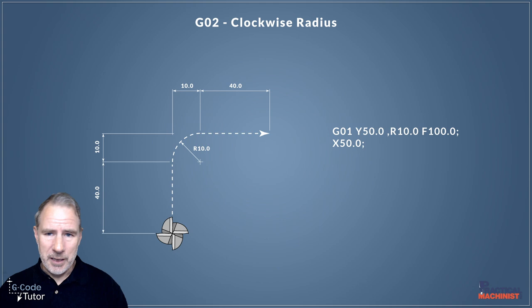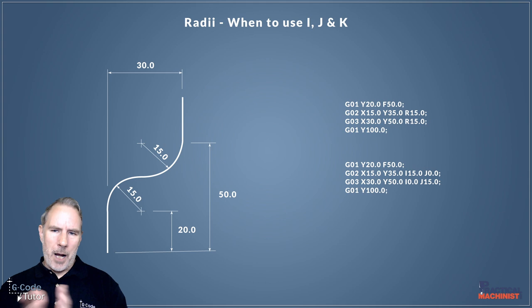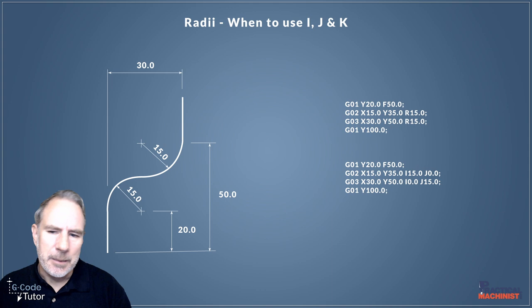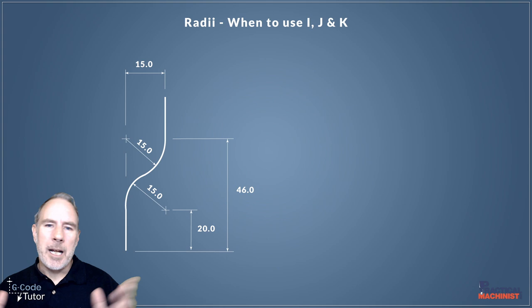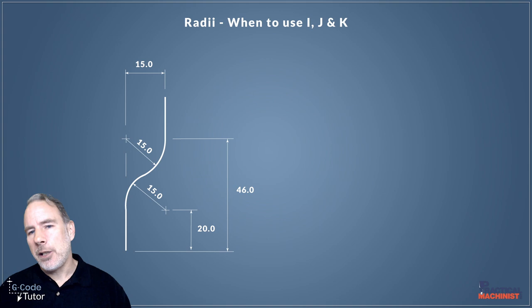Why do we need to use I, J, and K when we can just use an R value? Well, when we're programming a part like this, we could use R values for sure, but using I, J, and K allows us to pinpoint those center positions of the arc. On two radiuses such as this, we can get away with just using G02 and an R value or G03, but if we're using a compound radius such as this, we can't. Because those radiuses are not full 90 degree radiuses, there is a tangential meeting point in the middle. So when we come to do compound radiuses, i.e., radiuses that blend together, we need to use I, J, and K to get those smooth contours there.